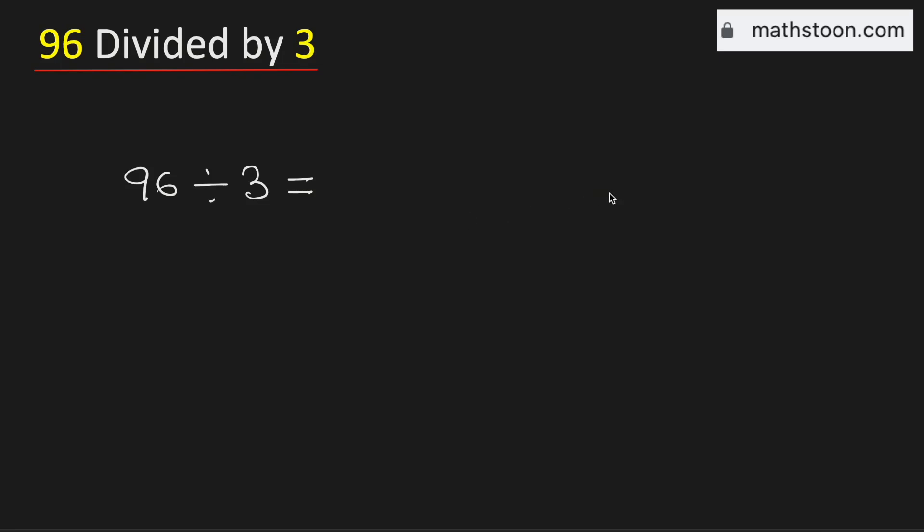In this video, let us learn how to divide the number 96 by 3 using the long division method. Consider the first digit, 9. We know that 3 times 3 is 9. Subtract, we get 0.